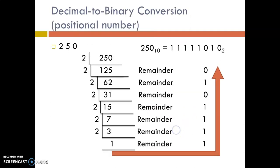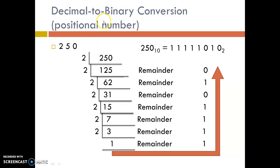Now we will see how to convert a decimal number to binary. First, we will take the integer part. The integer part is converted to binary by successive division method. Since the radix of binary is 2, we are going to repeatedly divide this decimal number by 2.